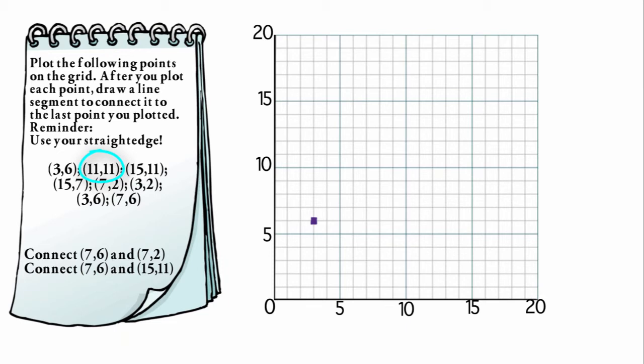So the second coordinate is (11,11). I'm going to start at the origin again. I'm going to go over 11 because that's the first number. And then I'm going to go up 11, straight up. And they would like us to connect those first two dots using a straightedge.